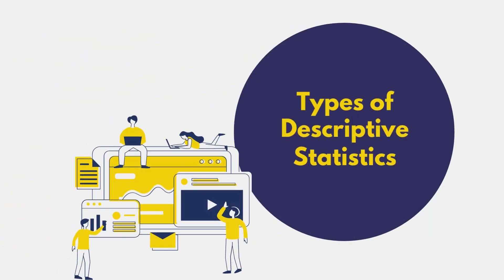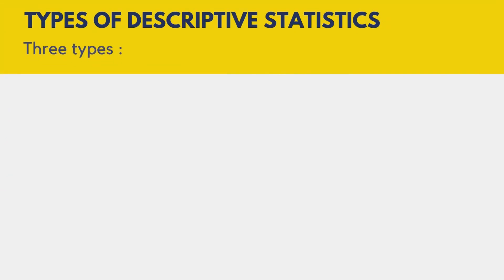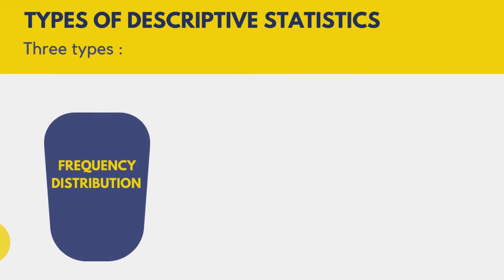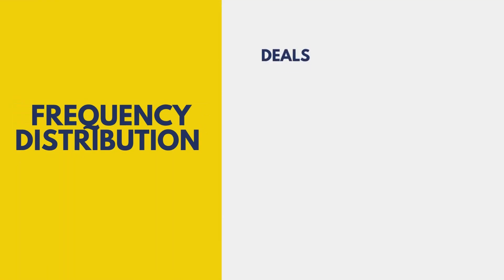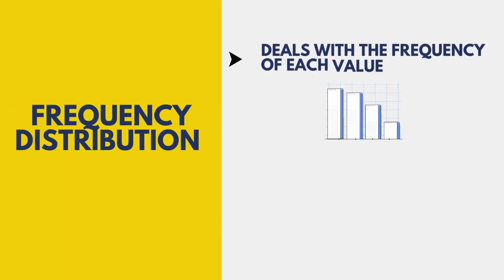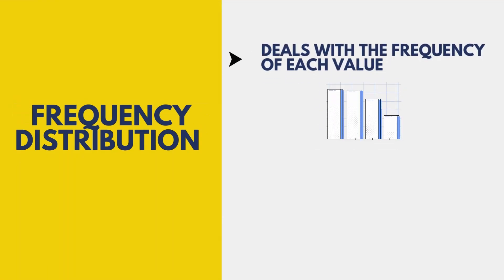Now let's move on to the types of descriptive statistics. There are three common types. The first type is the frequency distribution, which deals with the frequency of each value — that is, it tells how frequently something is occurring.